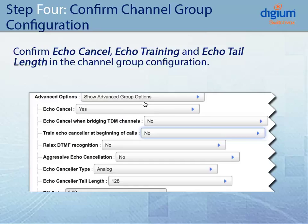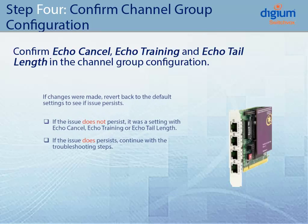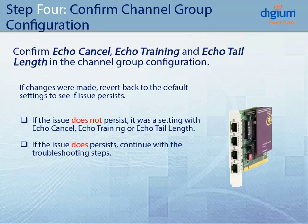In Step 4, you will now need to confirm that the settings for Echo Cancel, Echo Training, and Echo Tail Length in the Channel Group Configuration are set to Default Settings. If changes have been made, revert those changes back to Default Settings, then continue with your troubleshooting steps and place a call to see if that alleviates the issue. If it alleviates the issue, then it was just a setting within your Channel Group Configuration. If not, then you need to continue with your troubleshooting steps and check the hardware.